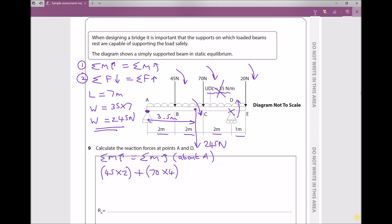Just remember to take the distance back to the pivot each time. And then we have a 20 newton force and that distance is 7 meters from the pivot.